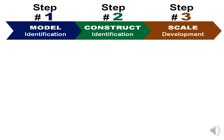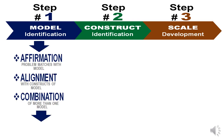Continuing the analogy into literature survey: model identification is an affirmation that my problem matches with the model I have chosen. It indicates an alignment of the problems I have and the constructs of the given model. If one model does not work, then a combination of more than one model sometimes works. For example, Theory of Reasoned Action (TRA) and Theory of Planned Behavior (TPB) have been combined many a time to create interesting studies.